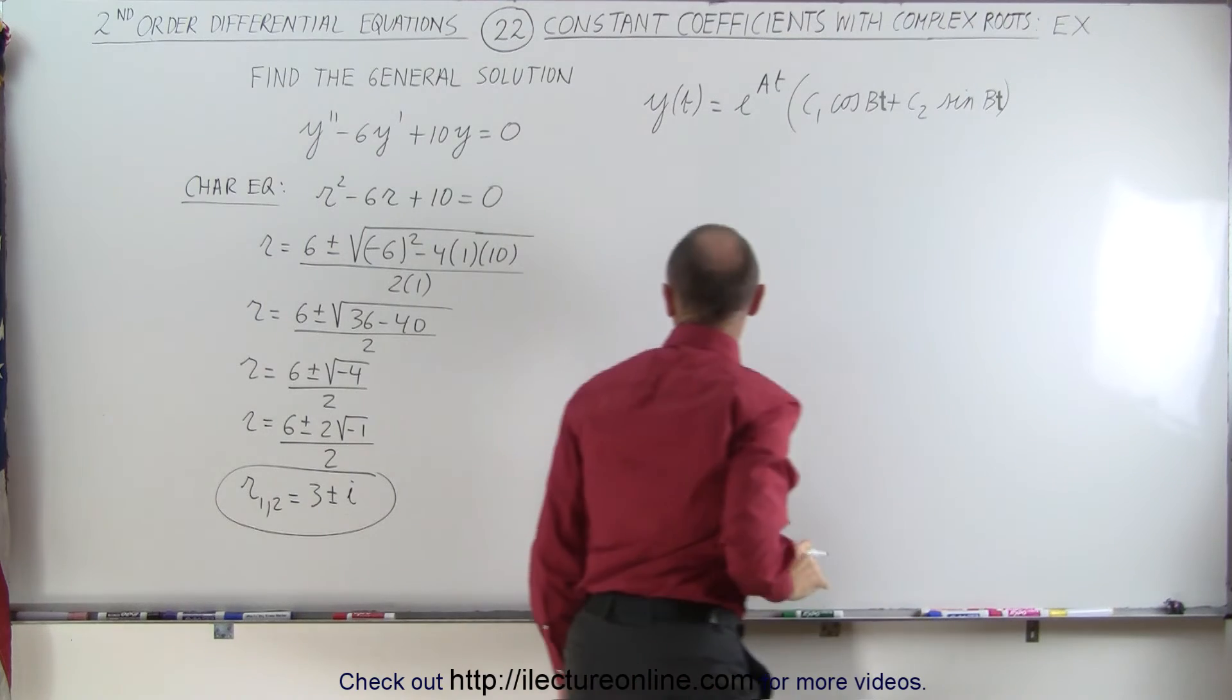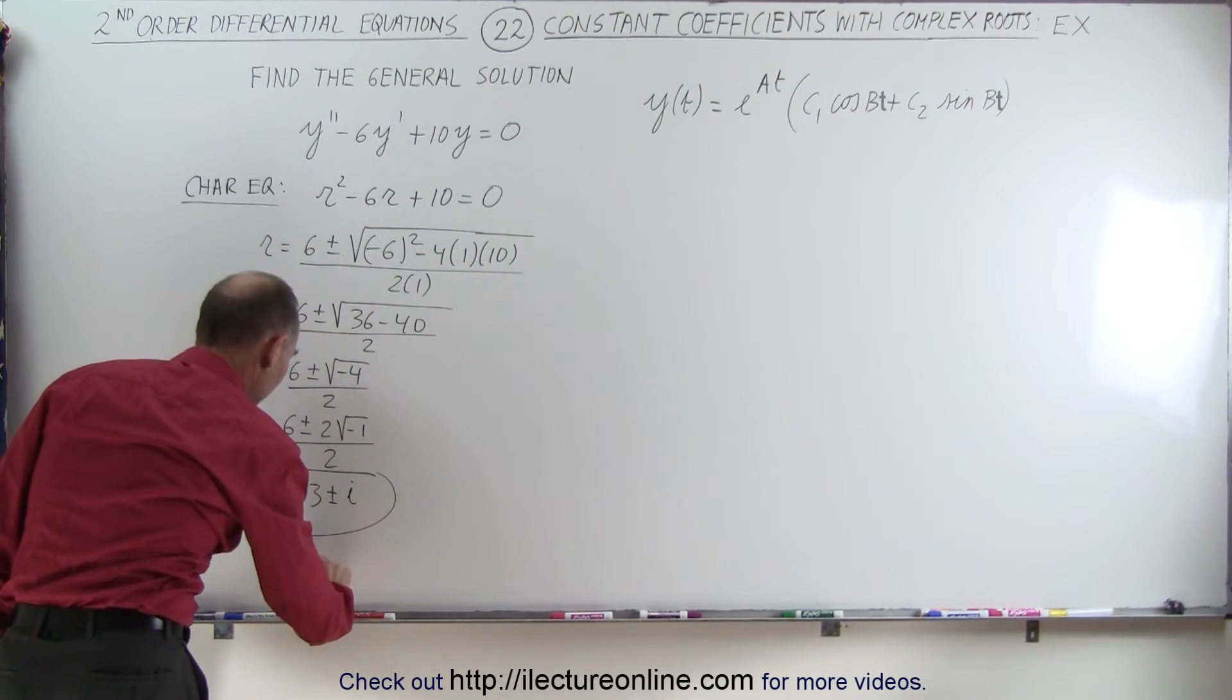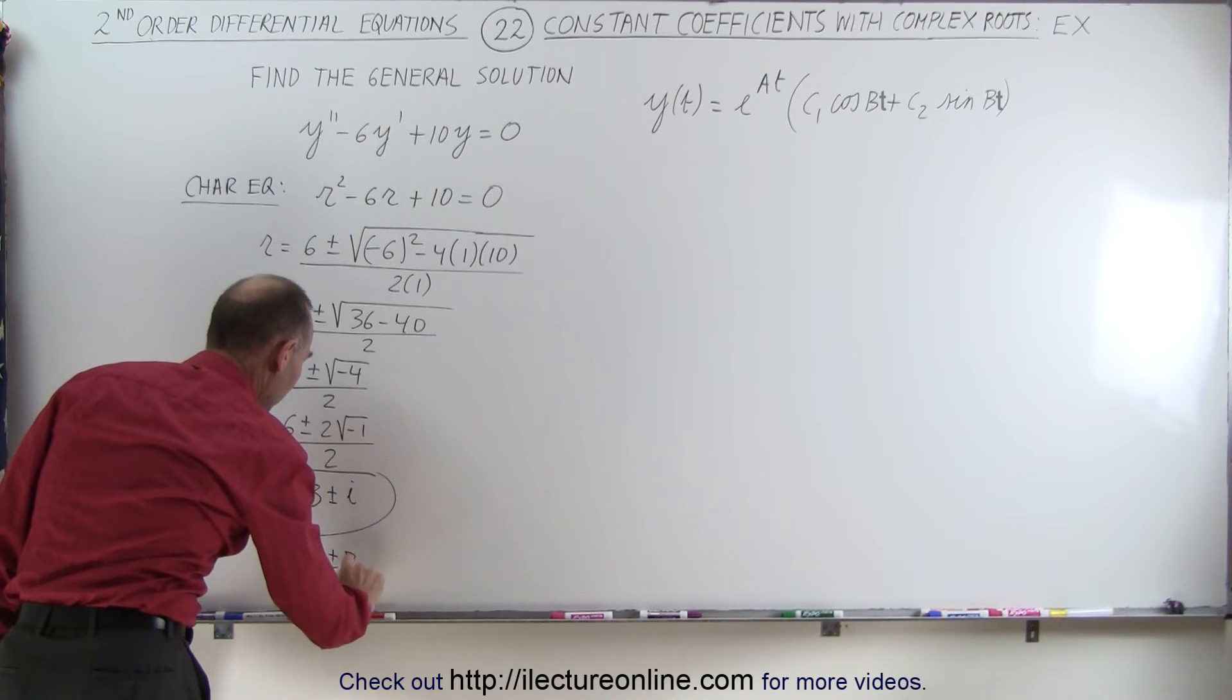And of course, A and B are the coefficients in our imaginary number. This would be equal to A plus and minus BI.